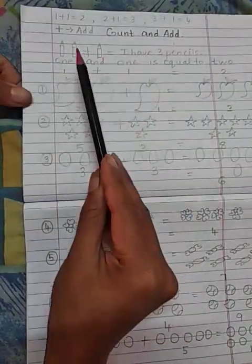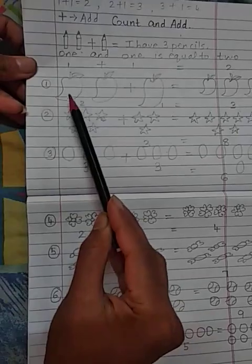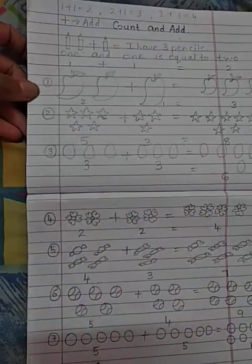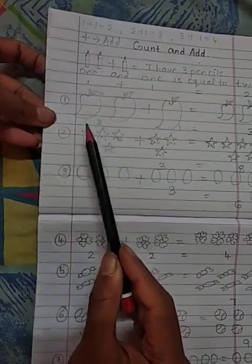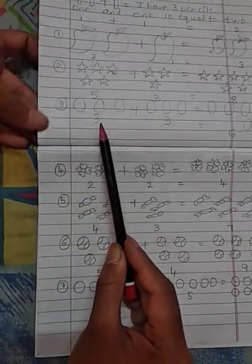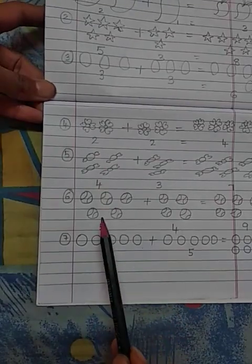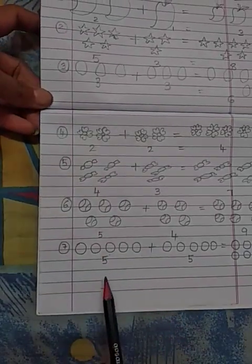We have given two more examples apart from it. With the images we have seen till 7. We have given examples of mangoes, stars, eggs, flowers, toffees, balls and circles.